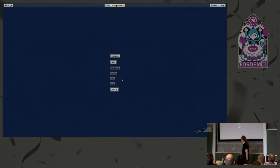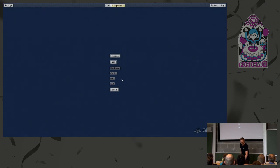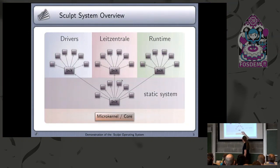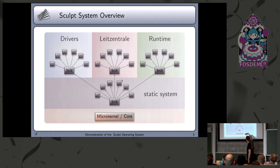So this is running on this machine right now. I've just booted into this system from a USB stick, and I can switch the slides on and off with the F11 key. The system I just booted contains a microkernel — in this case, the NOVA microkernel. It boots a static system, which is very simple, containing only a few components. I'll go into a bit more detail in a minute.